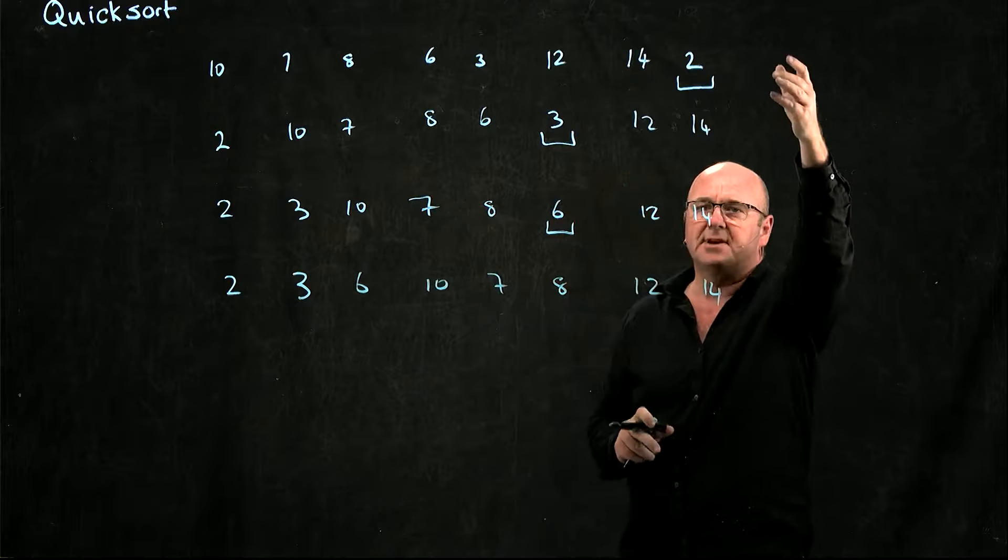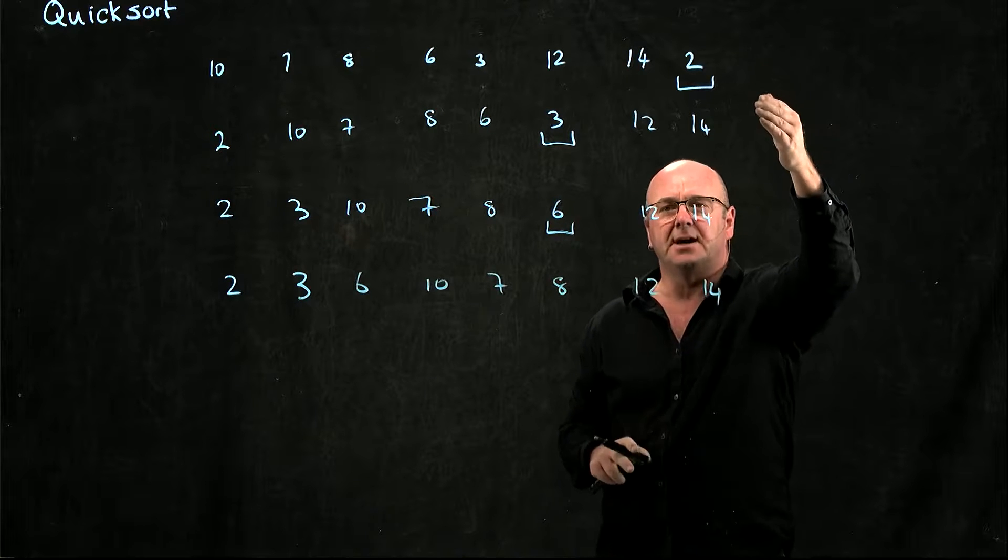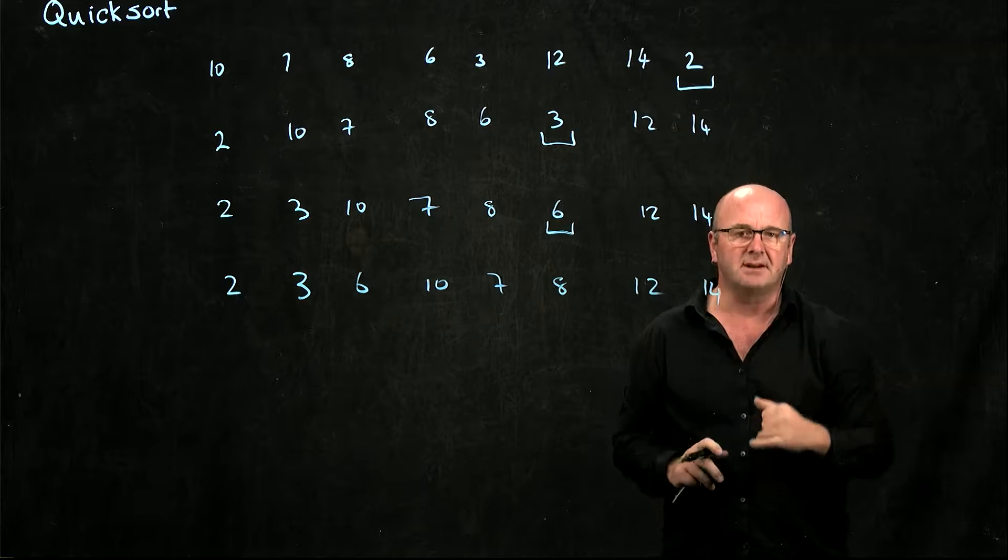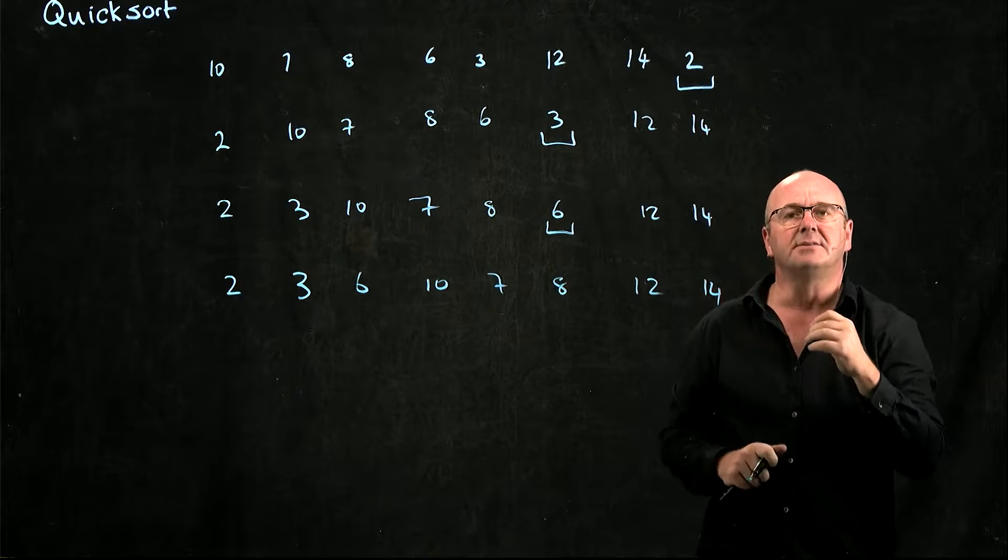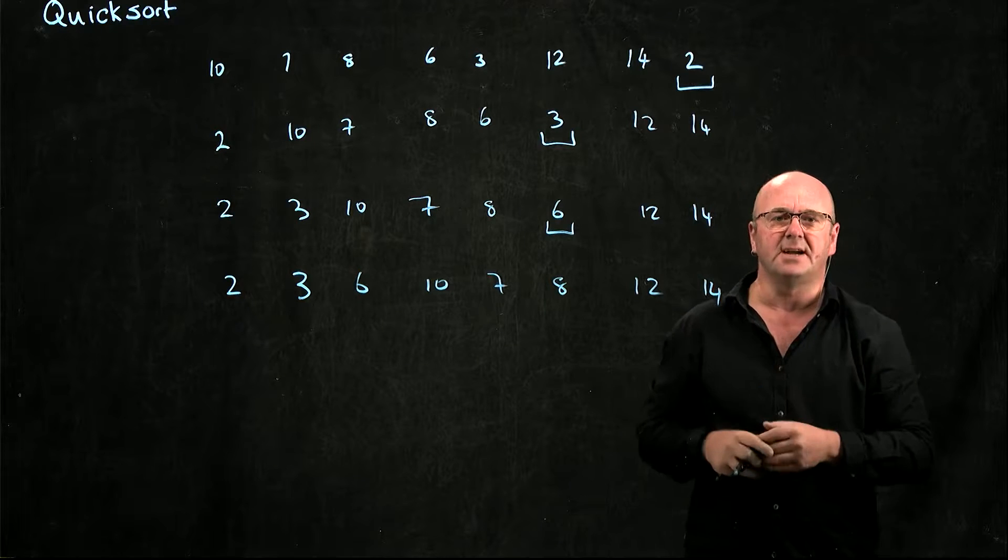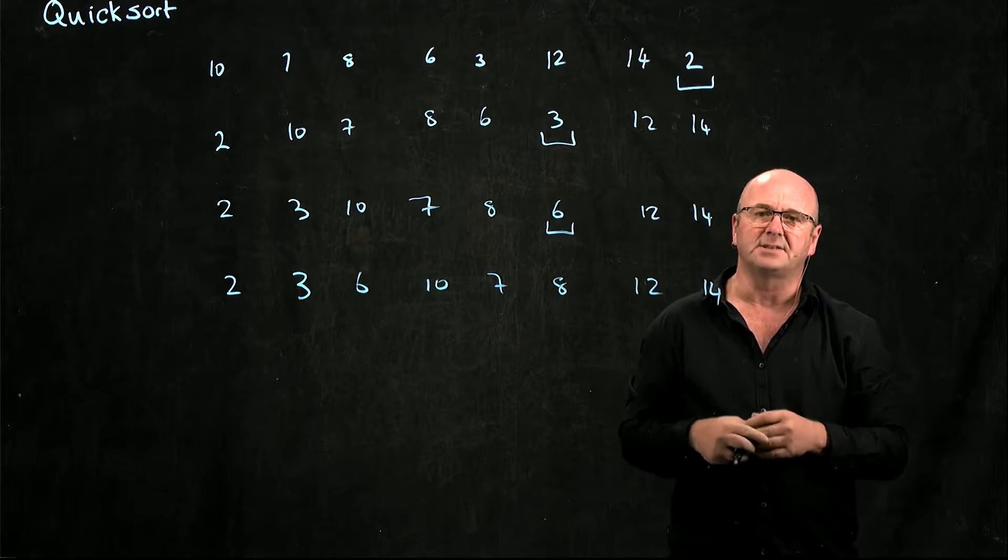So in the first case, I'm doing n minus 1 comparisons, and then I'm doing n minus 2 comparisons, and then n minus 3 comparisons, and then n minus 4 comparisons, and so on. And so in the worst case, quicksort will degrade to big O of n squared complexity.